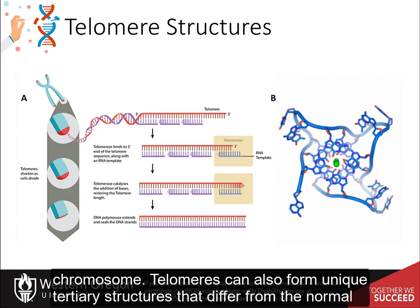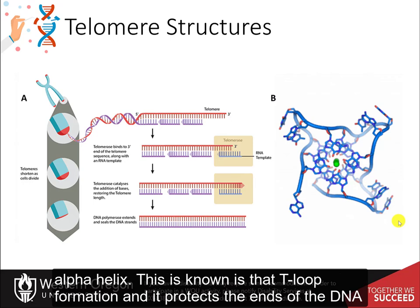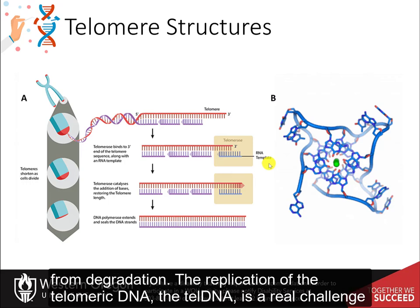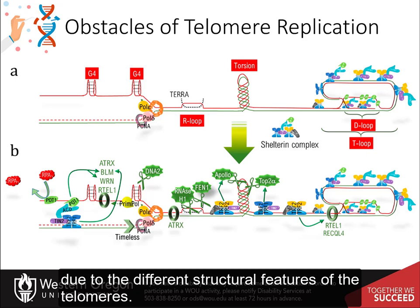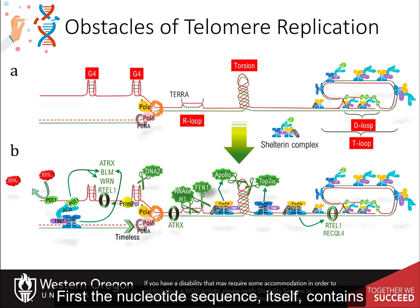Telomeres can also form unique tertiary structures that differ from the normal alpha helix. This is known as the T-loop formation, and it protects the ends of the DNA from degradation. The replication of the telomeric DNA, the tel-DNA, is a real challenge due to the different structural features of the telomeres.